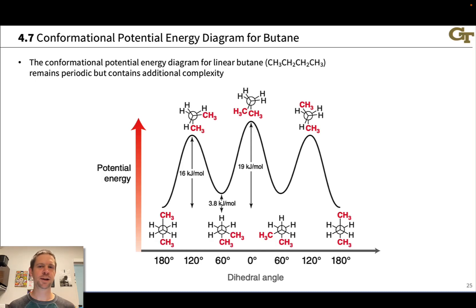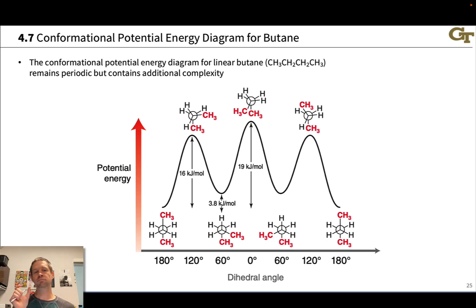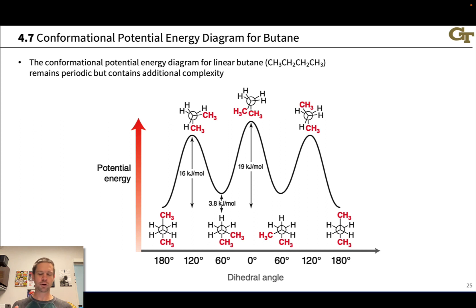In this video, we're going to look at the conformations and the conformational energy diagram for butane, the linear 4-carbon alkane. The potential energy diagram for linear butane is a bit more complicated than the propane and ethane diagrams that we've seen already, and I want to point out a couple of interesting things before we dig into the details.